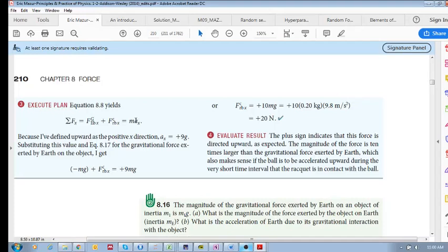So if we know that the acceleration of the ball is 9g, we replace this with 9g. We put that in there. So we have 9g times m. That's on the right-hand side. And then the gravitational force is minus mg. It's acting down. And then the racket force is F_rb, and it's positive.